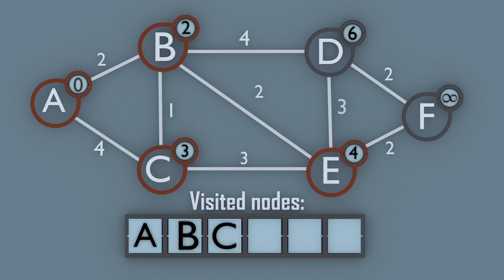From node E we compare the distances to nodes D and F since nodes B and C have already been visited. That way we set node F's weight to 6.